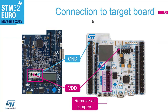We need to supply the Nucleo from the power shield. To do this, connect the ground and connect the VDD to the jumper above — this jumper needs to be removed and replaced with a jumper wire. We also need to disconnect all the jumpers connected to the ST-Link, as they increase consumption. We want to isolate the target from everything else on the board, so disconnect all the jumpers at the bottom.